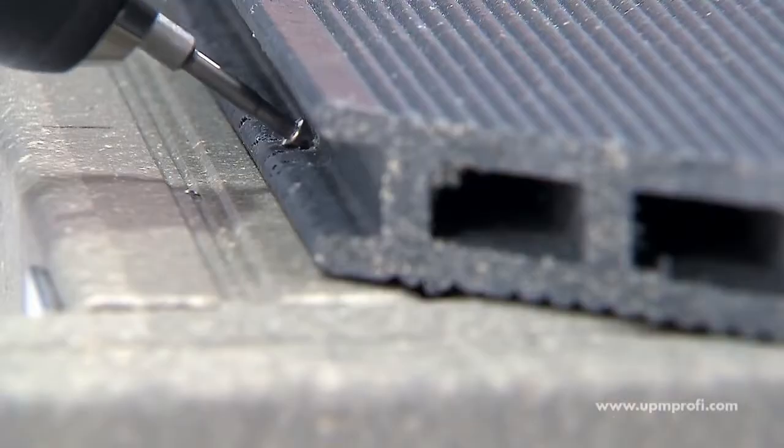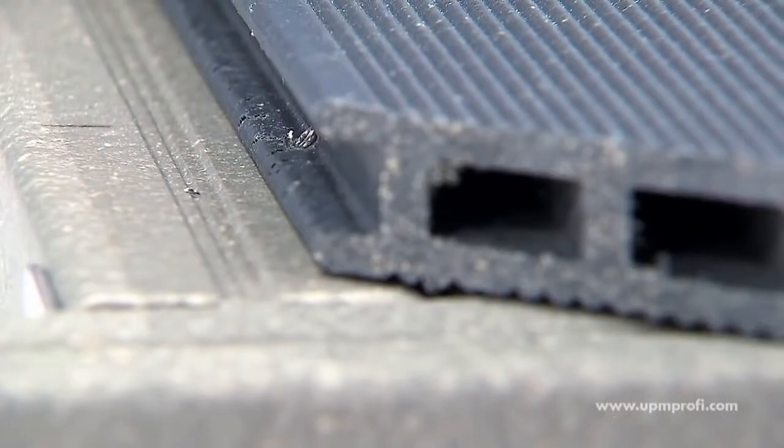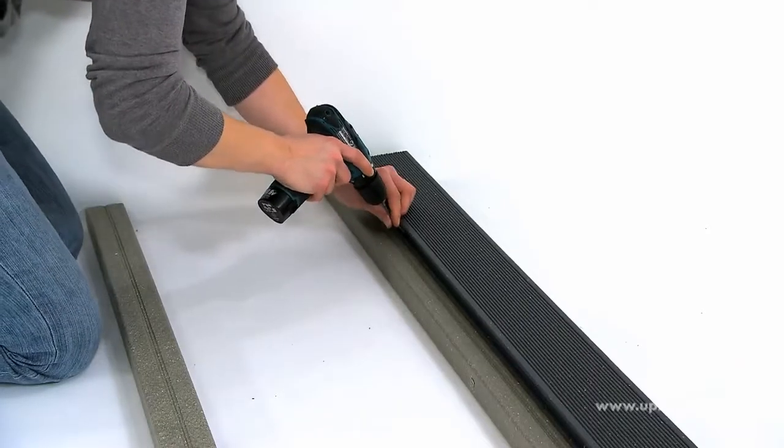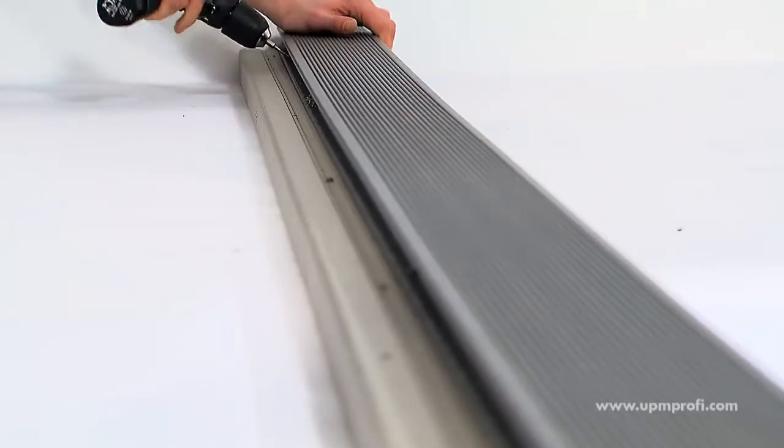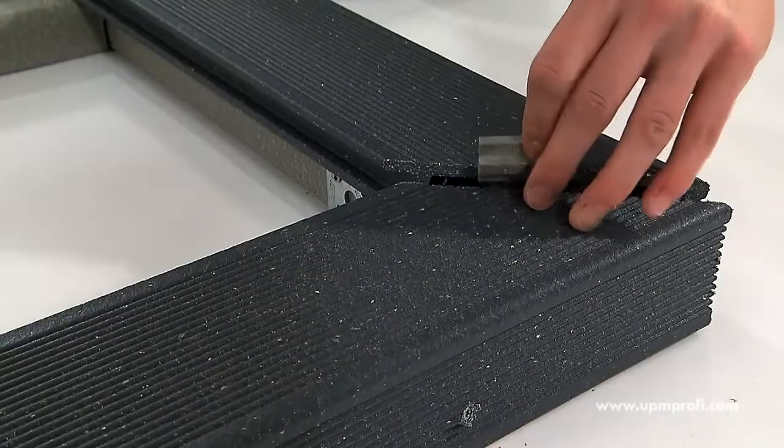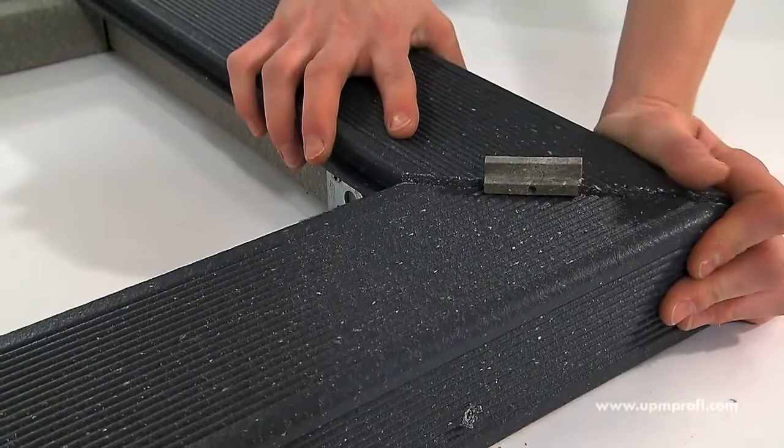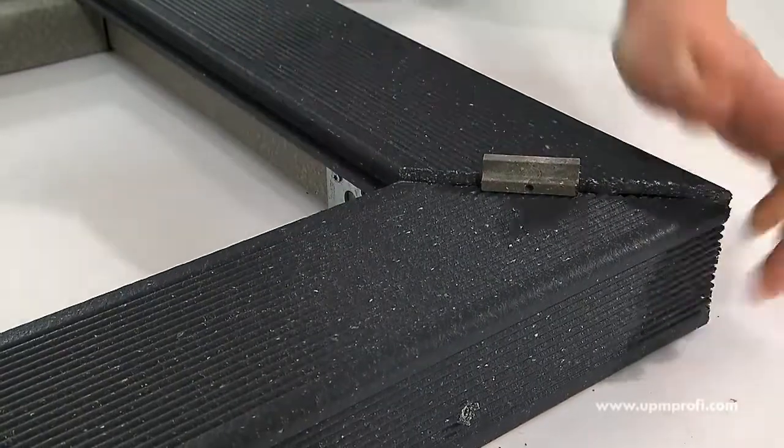Screw through the centers of the oval holes directly into the support rails or joists. UPM Profi T-clips should be used as spacers to create the correct expansion gaps. Now screw the next rail step board as before.